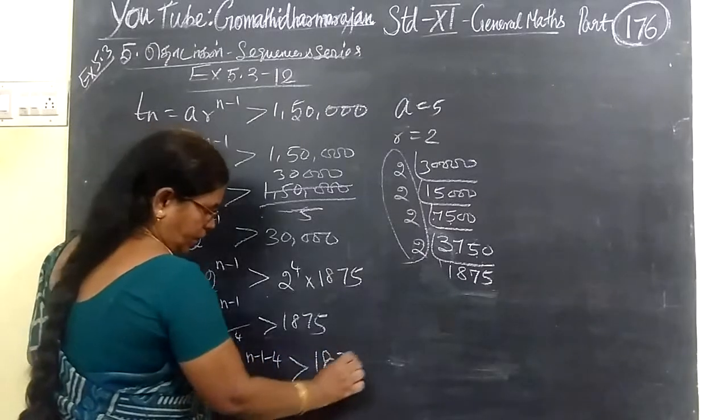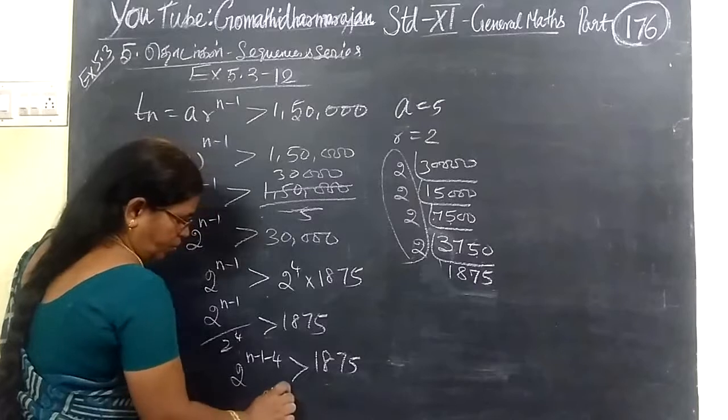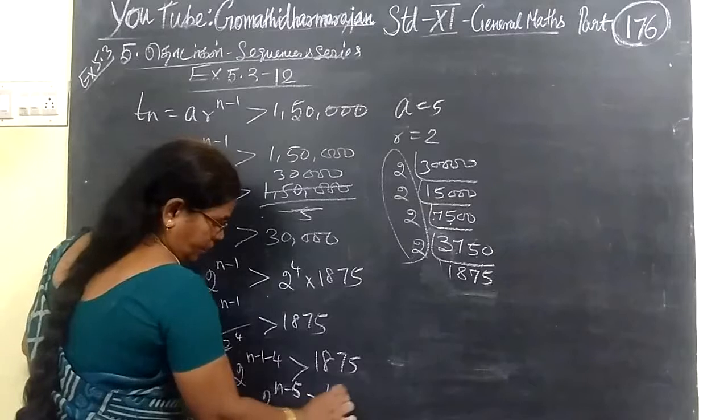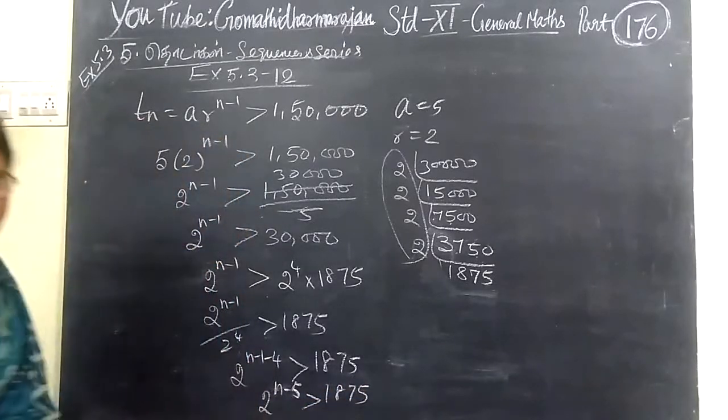Next step is to simplify further. So, if you get this, that is 2 power n-5, then greater than 1,875.